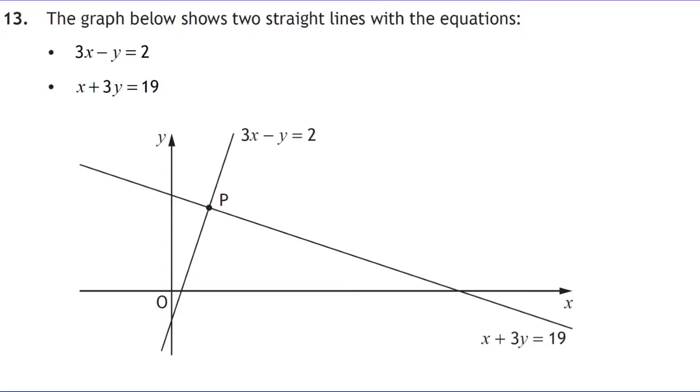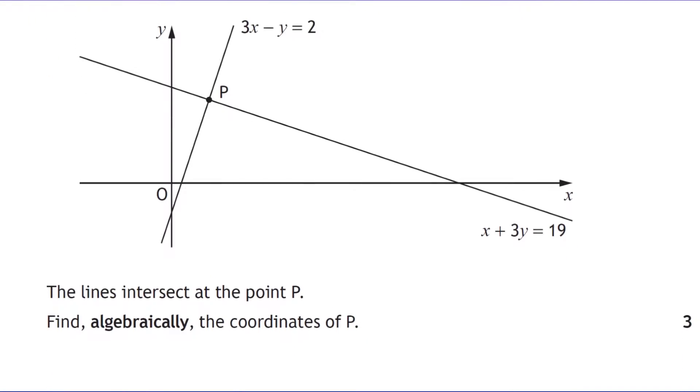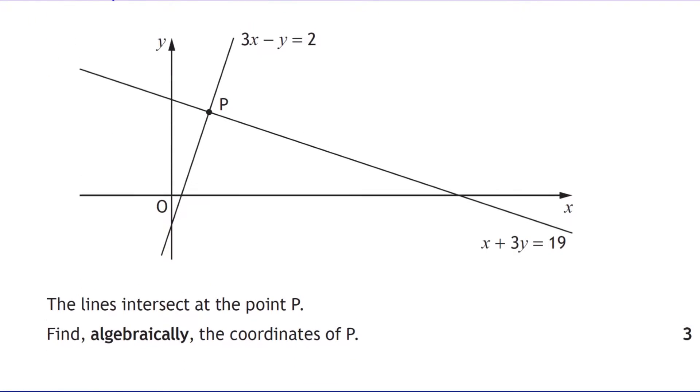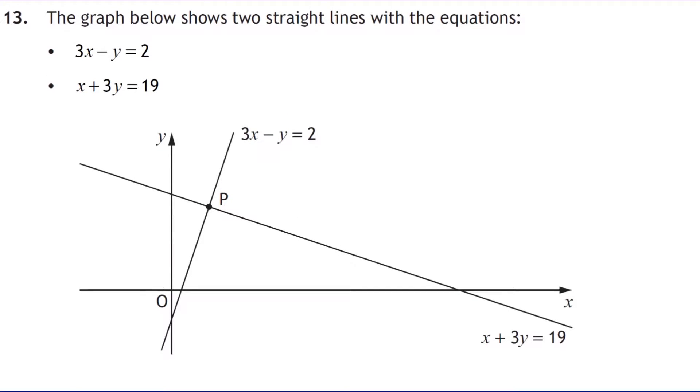Question 13. It looks like it's going to be a simultaneous equation. We've got two sets of equations representing two straight lines. We want to find algebraically the coordinates of p, the point of intersection. So let's go for elimination for this one. We've got 3x minus y equals 2, and x plus 3y equals 19. So I'll call that equation 1 and 2. I'm going to scale these so that we can eliminate one of the terms. I normally go for the y, unless it's really beneficial to go for the x term. So I'm going to multiply the top equation by 3. So we get 9x minus 3y equals 6, call that equation 3, and x plus 3y equals 19. I'm going to call that equation 4, it's the same as equation 2 though.